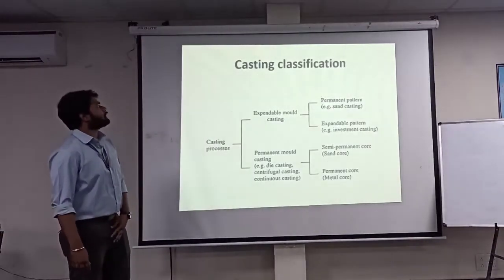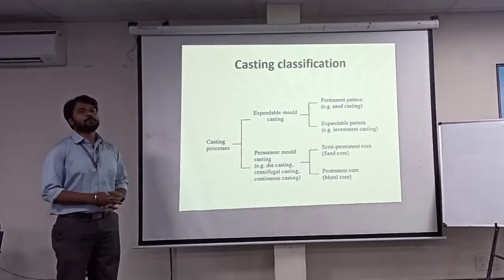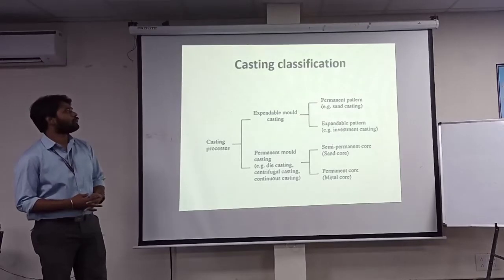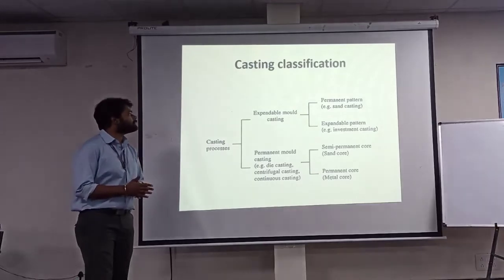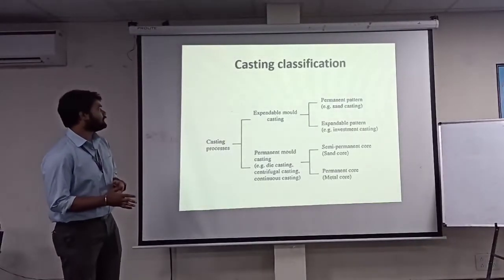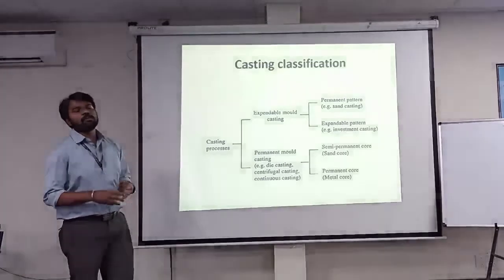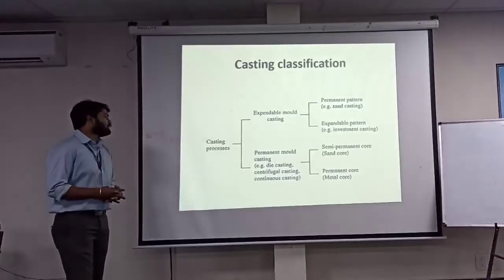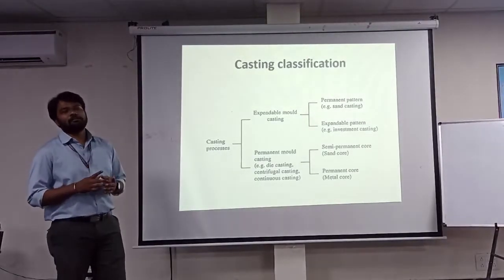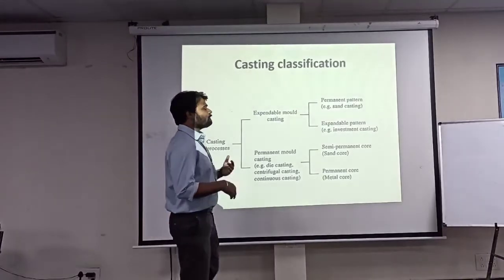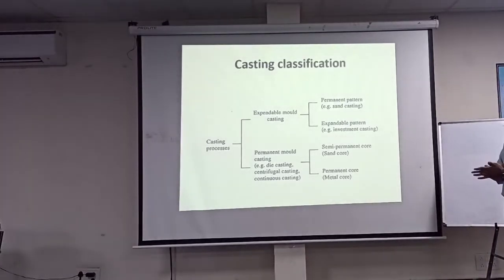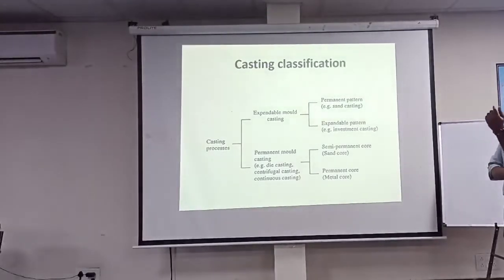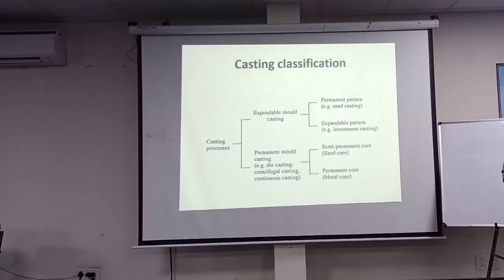In casting, there are different types of classifications. The primary one is expandable mold casting, also called temporary mold casting, and the secondary one is permanent mold casting. In expandable mold casting, we change the mold each and every time. In permanent mold casting, the mold is constant and with a single mold we can manufacture a number of components. Under expandable mold casting we have sand casting and investment casting, and under permanent casting we have semi-permanent or permanent pore, also called die casting.